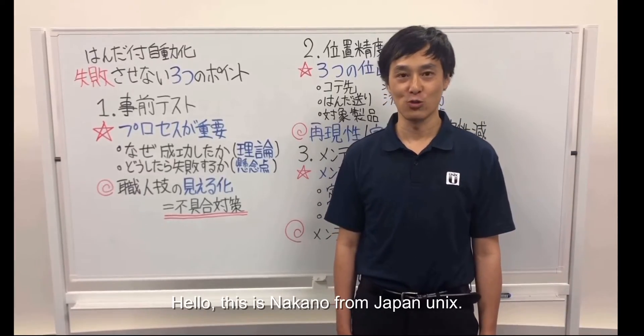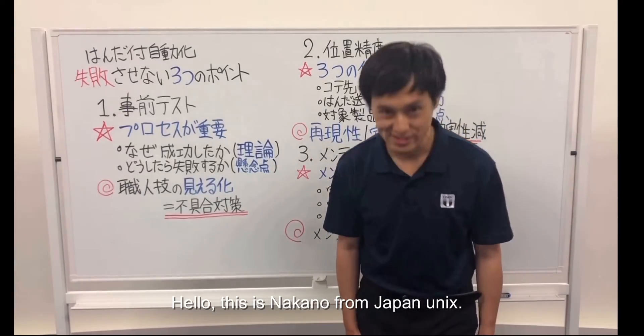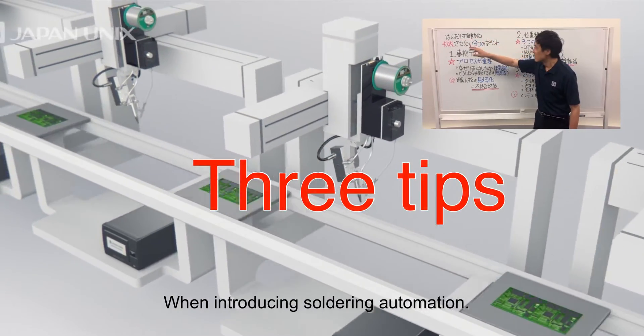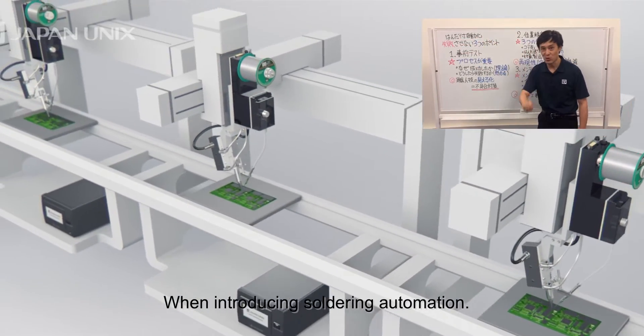Hello everyone. This is Nakano from Japan Unix. Today, I would like to share three tips for avoiding failures when introducing soldering robots and automation.